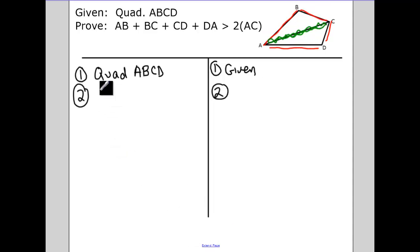We have, we know that AB plus BC has to be greater than AC. And CD plus DA also has to be greater than AC. By our triangle inequality theorem. Two sides of a triangle have to be larger than the third.